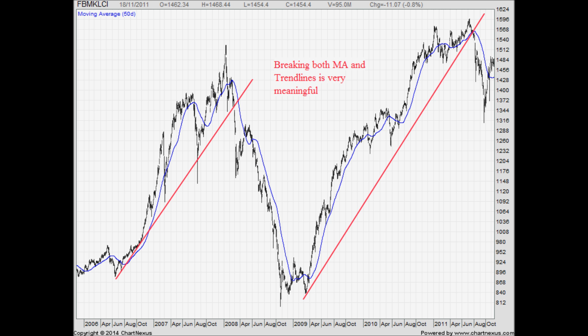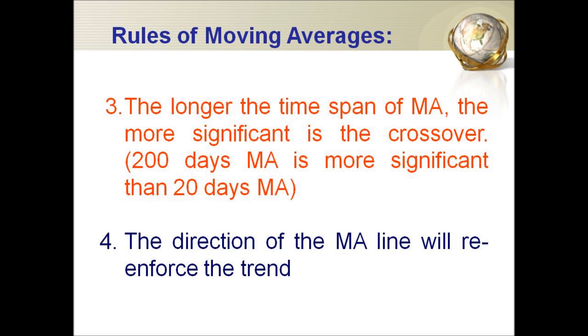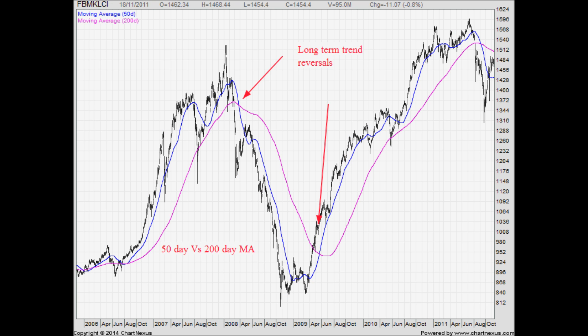Rule number 2: always remember to draw trend lines. Moving averages work very well with trend lines. Rule number 3: the longer the time span of the moving average, the more significant is the crossover. Comparing two pairs of crossovers — on one side a 10-day and 20-day crossover, and on the other side a 50-day and 200-day crossover — the longer-day crossover has more meaning than the shorter-day crossovers.